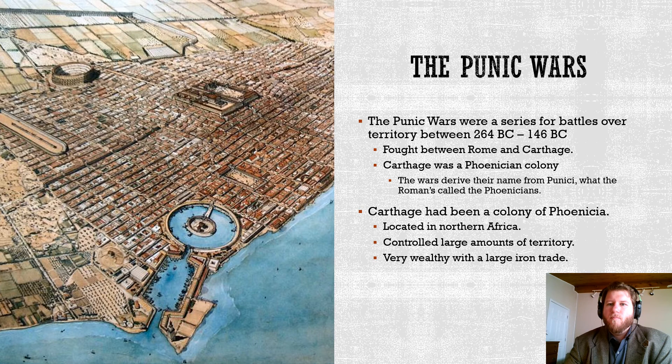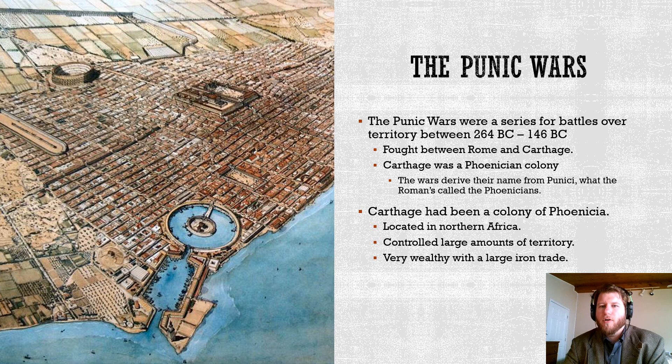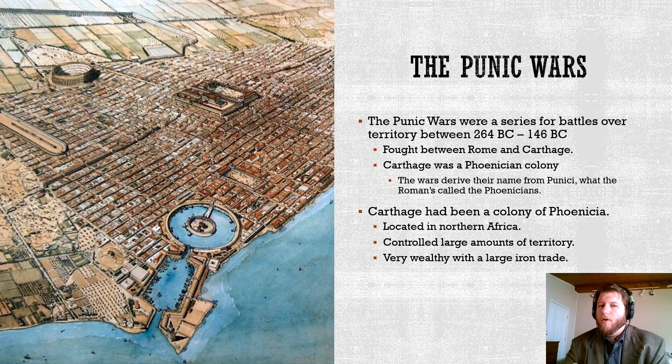The Punic Wars are a series of wars in which Rome expands throughout the Mediterranean and asserts its dominance in the region. The Punic Wars are battles essentially between the Romans and the Carthaginians — a group of people from North Africa, essentially Phoenicians living in the colony of Carthage. We call them the Punic Wars because that's what the Romans called the Carthaginians — the Punici or the Phoenicians.